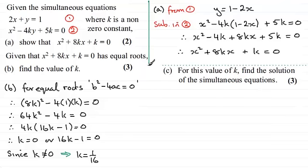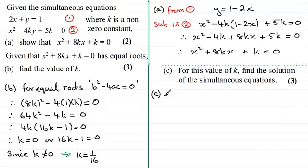Now for part C, for this value of k, find the solution of the simultaneous equations. To do this, we know k equals 1/16, and all I need to do is substitute this back into the equation. So we're going to have x squared plus 8 times 1/16 times x plus 1/16 equals 0.